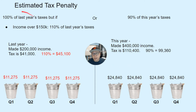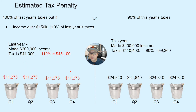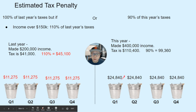If we run the 100% last-year calculation using the same scenario but last year's income was $200,000 with a tax of $41,000: because this year's income is over $150,000, we must use 110%. So 110% of $41,000 is $45,100. Divide that by four — that's what goes into each bucket. Between the two rules, you choose the lower. The last-year method requires only $11,275 per quarter compared to $24,840, so we use the last-year method.